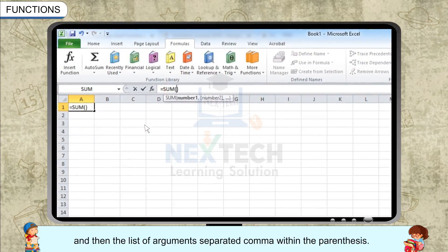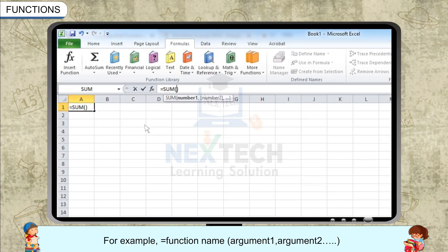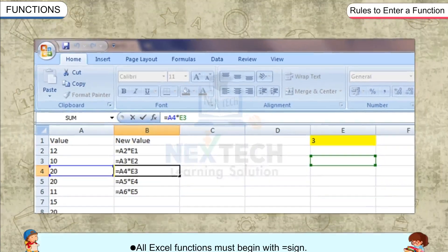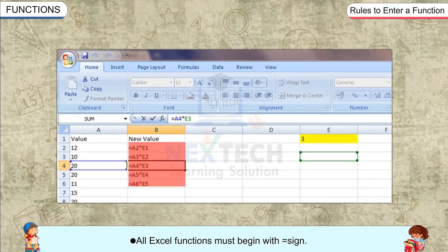Separated by commas within the parenthesis. For example, equals function name, argument one, argument two, and so on. Rules to enter a function: All Excel functions must begin with the equal to sign.